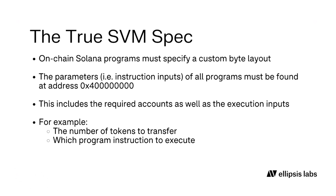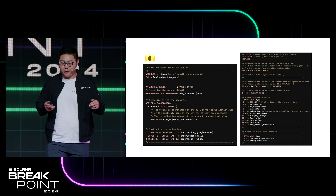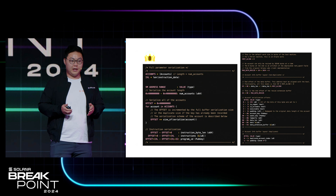This includes the accounts needed — the state that the program requires to do execution — as well as the inputs, which can include the number of tokens that something needs to transfer or which instruction inside a program needs to be executed. All of this is represented inside the parameters serialized into virtual memory. It's a pretty complicated spec with a lot of detail, but the high-level takeaway is there is a specific format for everything. This documentation details how the address space is laid out.